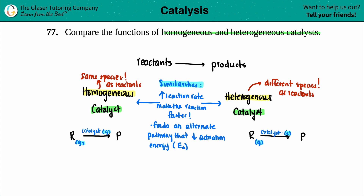So to summarize: the similarities are that they both lower the activation energy, making the reaction faster. The difference is different states — depending on whether the catalyst is the same or different from your reactants. I hope this helped — let me know in the comments. Thank you so much for viewing the video. Become a member if you want to help the channel out, and I'll talk to you in later lessons. Bye-bye!